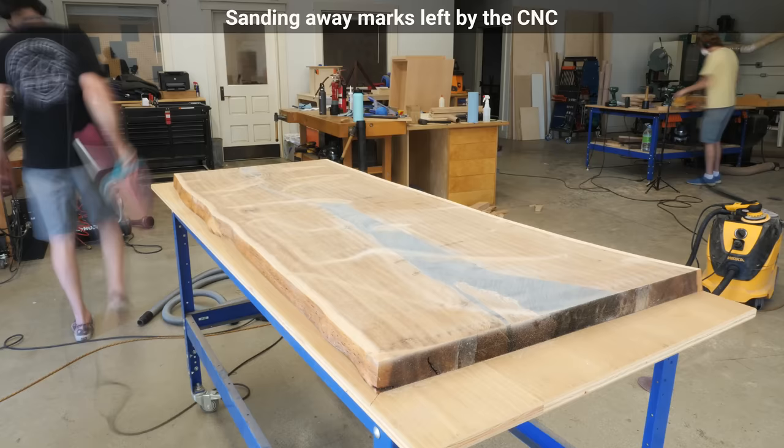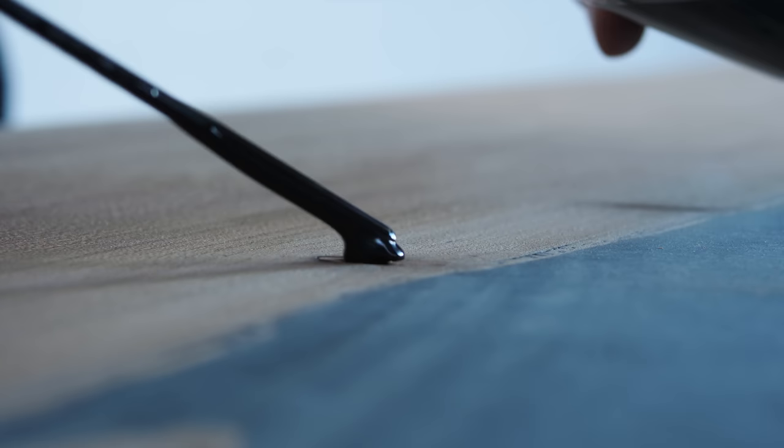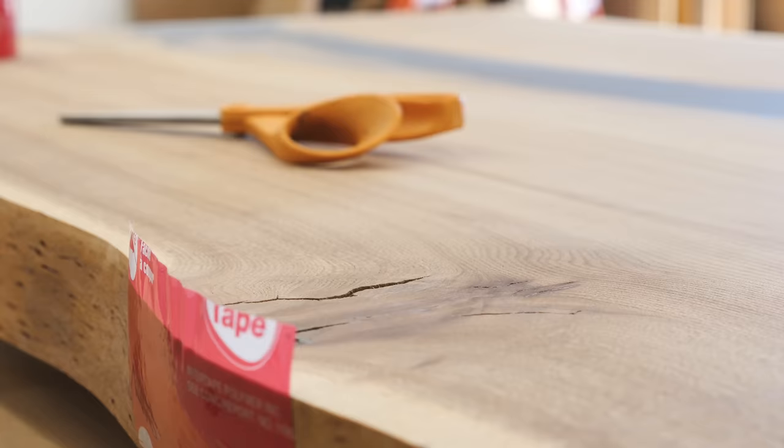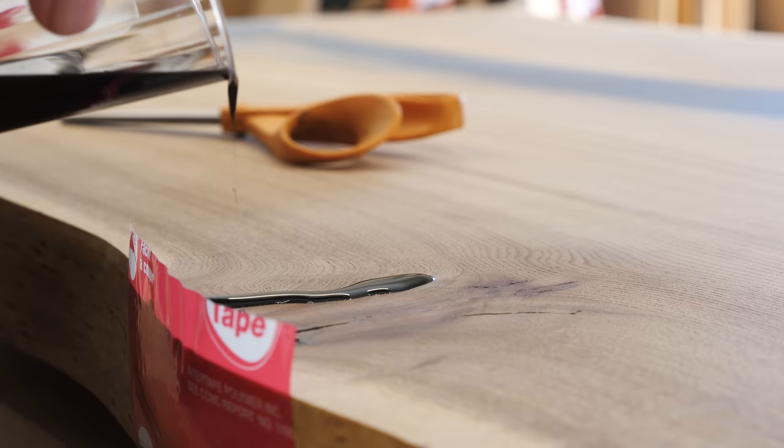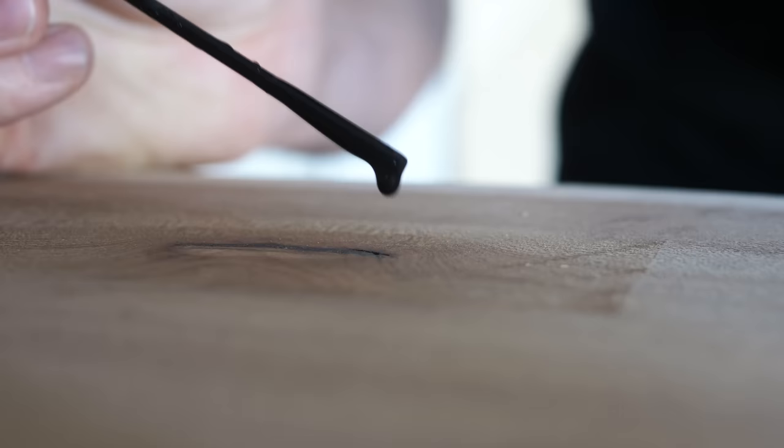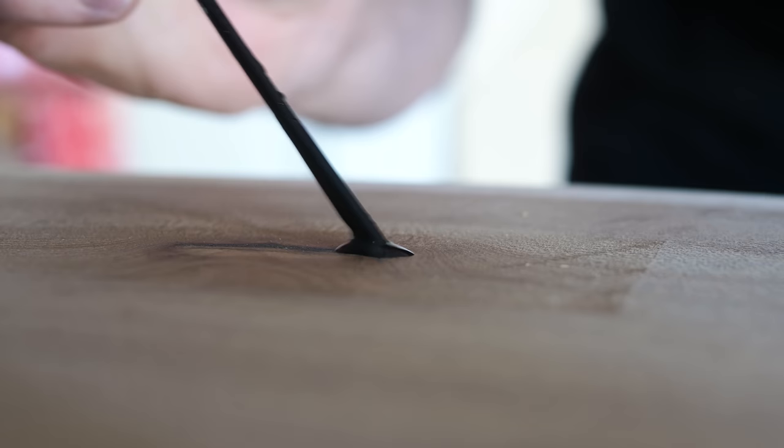Something we've realized with these epoxy slab projects is that there's a lot of hoping involved. Like whenever we've built a more traditional piece of furniture, we have a pretty good idea of how it's going to turn out, how long it'll last under normal wear and tear and that kind of stuff. But take what we're doing here for example, which is filling in some cracks on the underside that we couldn't get to at first. Well is it even necessary? Probably not. But it's also probably a good idea to get as many filled as you can.